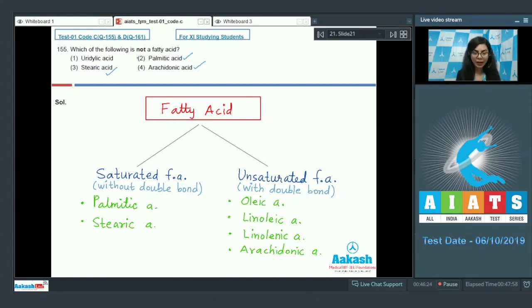However, uridylic acid is a nucleotide monomer in RNA and consists of a phosphate group, pentose sugar ribose, and nucleoside uracil. Thus this is not a fatty acid, which makes it the right answer. The correct option here would be option one, uridylic acid.